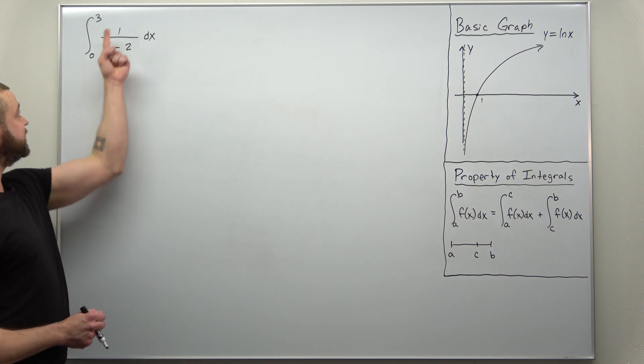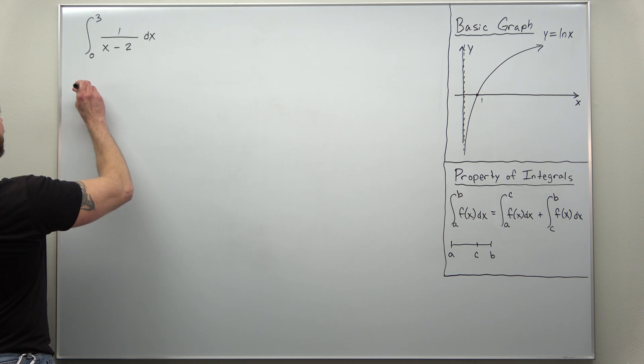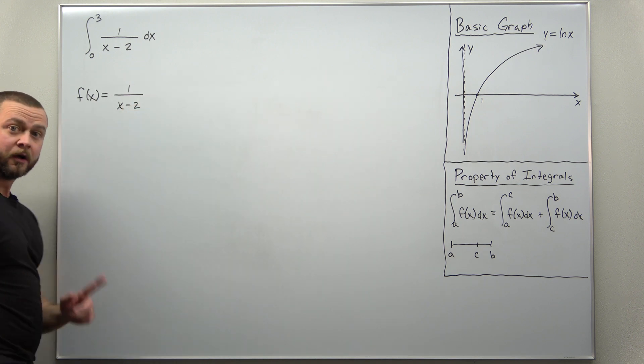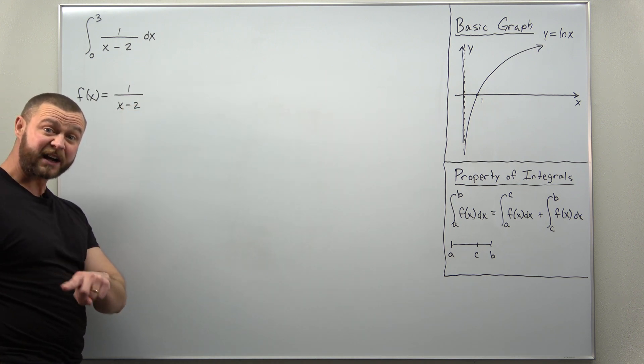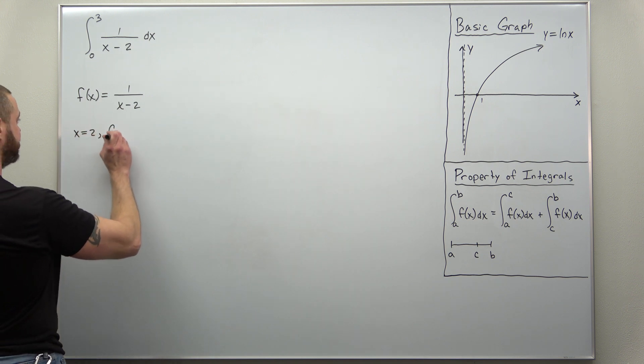You can probably see it if we call our function f of X equals 1 over X minus 2. Notice that function becomes undefined when X equals 2. If we were to plug that in, that would give 1 over 0.